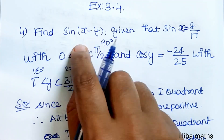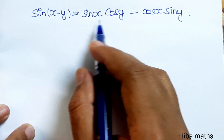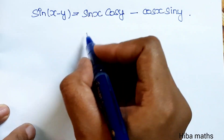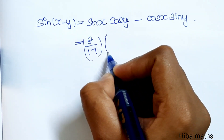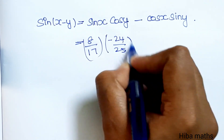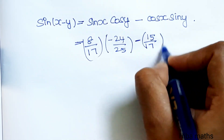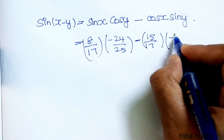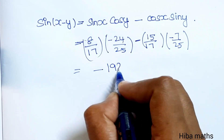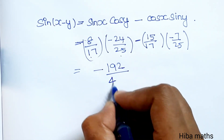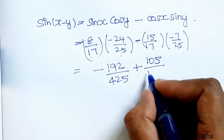Now find sin(x - y) using the formula: sin(x - y) equals sin x cos y minus cos x sin y. Substituting: sin x equals 8 by 17, cos y equals minus 24 by 25, cos x equals 15 by 17, sin y equals minus 7 by 25. This gives: (8/17)(−24/25) minus (15/17)(−7/25), which equals minus 192 by 425 plus 105 by 425.